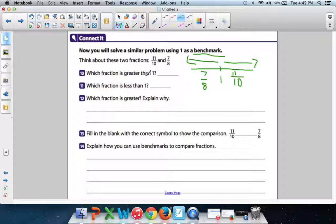Which fraction is greater than one? Well, seven-eighths is less than over here. Eleven-tenths is over, so 11-tenths, right? Which fraction is less than one? Well, that's got to be the other one, seven-eighths. So since 11-tenths is bigger than one, and 7-eighths is less than one, which fraction is greater? Explain. No problem.